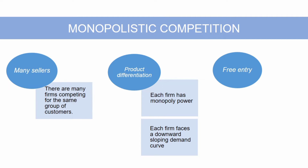The situation is similar for other monopolistically competitive markets such as jeans, shampoo, or detergent producers. And the third characteristic is that there is free entry and exit. It is relatively easy for new firms to enter the market with their own brands of the product, and for existing firms to leave if their products become unprofitable.